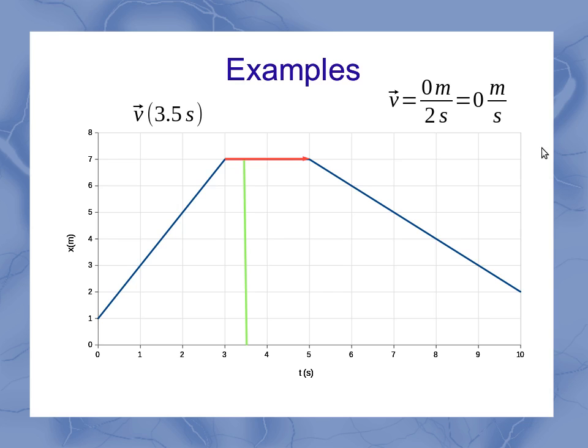So whenever we have a horizontal segment, we know that the velocity anywhere along that segment is going to be 0.